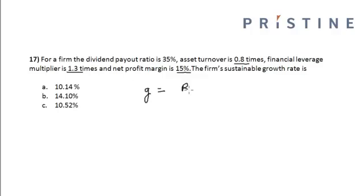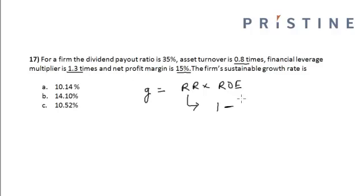The growth rate is equal to the retention rate multiplied by ROE. The retention rate is 1 minus the dividend payout ratio, that is 1 minus 0.35, which equals 0.65.